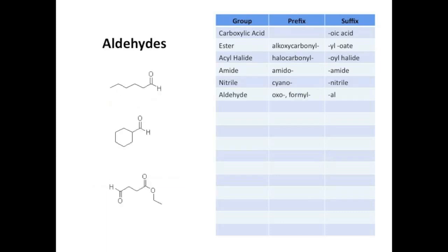Okay, aldehydes. They're named by adding the suffix -al, so the first example is hexanal. They are terminal just like carboxylic acids, and as such, don't need a number to specify where the functional group is. Number 2 is a special case. When attached to a ring, they are given the suffix -carbaldehyde, making this one cyclohexane carbaldehyde. Simple enough.